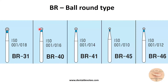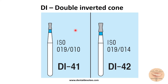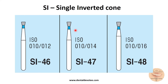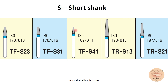BR series of burrs are ball round type burrs, whereas BC burrs are those with ball shape but with a collar attached on the neck side. Take some time to know all these different types of burrs and what their model numbers signify. Take notes by pausing the video and recall often.